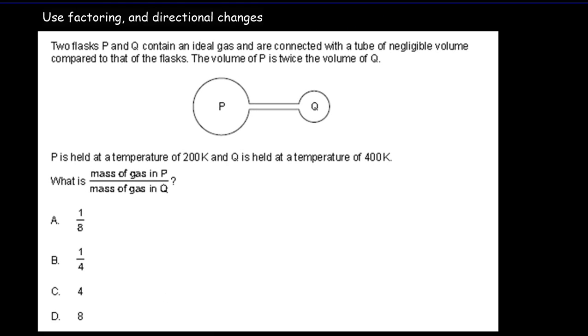Here's a question. Pause the video, read the question over, and try to do the question without using any equations, just using some reasoning. So the first thing you might consider is any directional changes. So I can see right here that P is bigger than Q. And especially since the pressures are the same, I'm expecting more mass to be in P. So I'm expecting this ratio to be bigger than one. And for that reason, I would eliminate choices A and B.